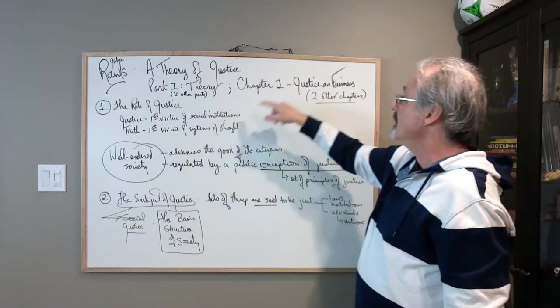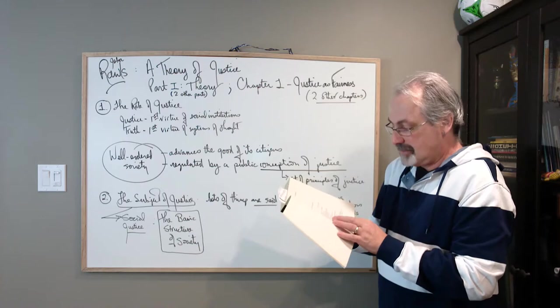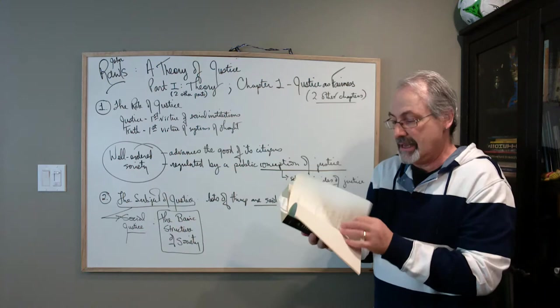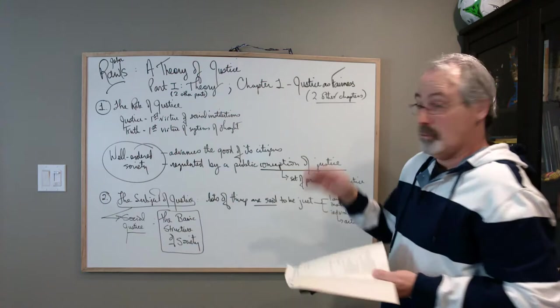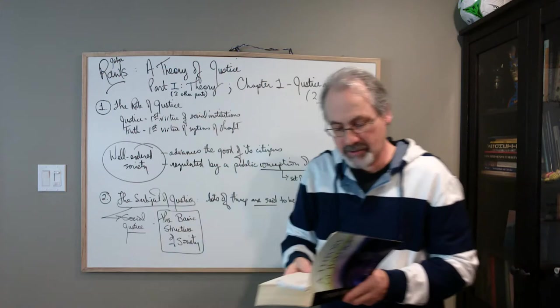So part one deals with theory, chapter one of part one is justice as fairness. There are two other chapters in the theory section. Chapter two, which will come in a later video, deals with the principles of justice, and chapter three deals with what Rawls calls the original position. So what I'm doing in this video is looking at part one, chapter one, and section one of chapter one. And section one of chapter one is called the role of justice.